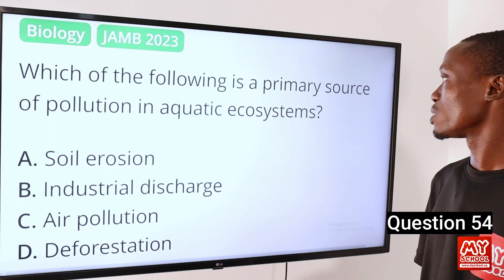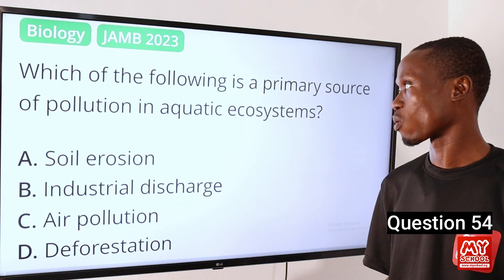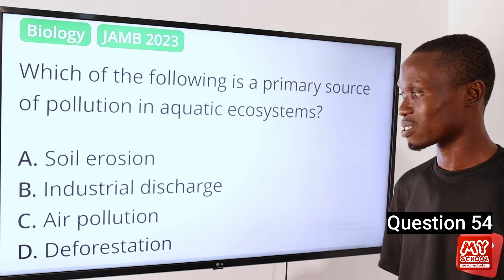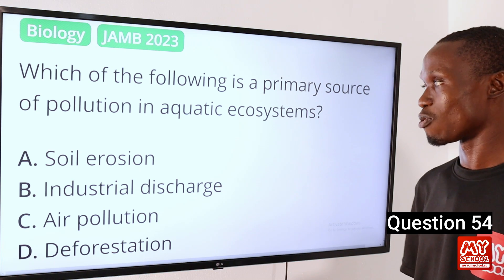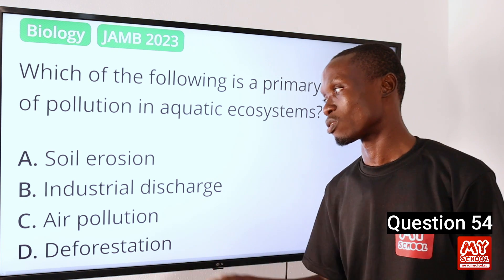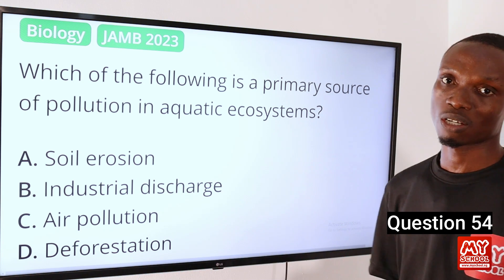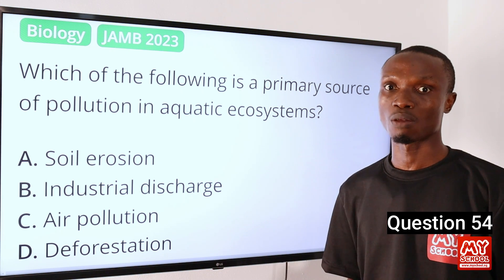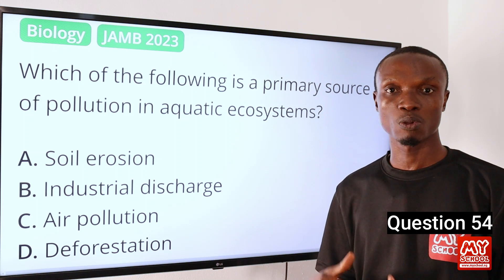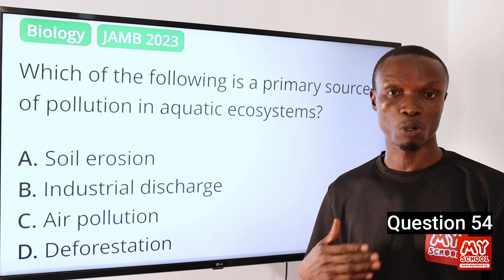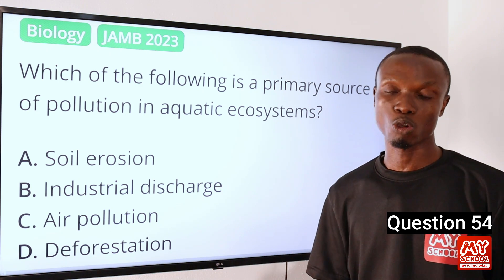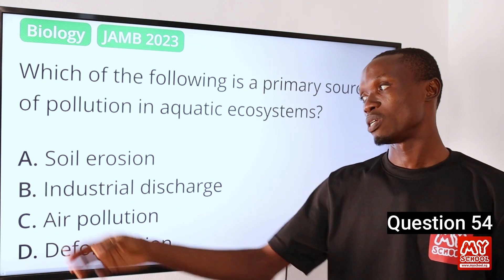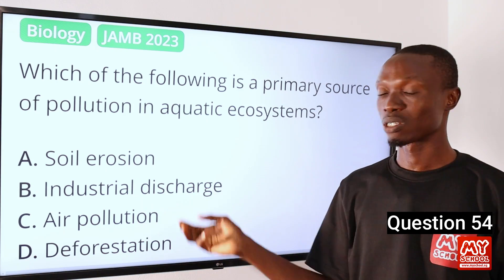Question 54. Which of the following is a primary source of pollution in aquatic ecosystems? A. Soil erosion. B. Industrial discharge. C. Air pollution. D. Deforestation. The answer is industrial discharge. Industrial discharge is a primary source of pollution in aquatic ecosystems — industries produce various pollutants which are released into nearby water bodies, leading to pollution of water and adverse effects on aquatic life. So that makes option B the correct answer.